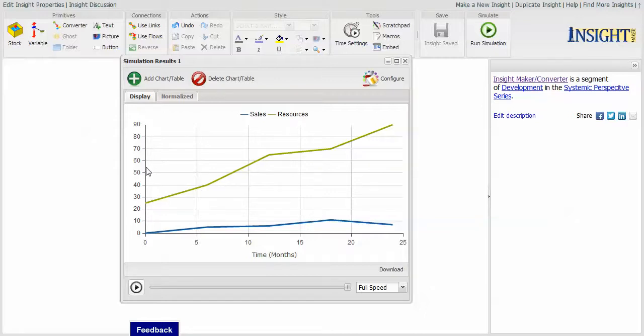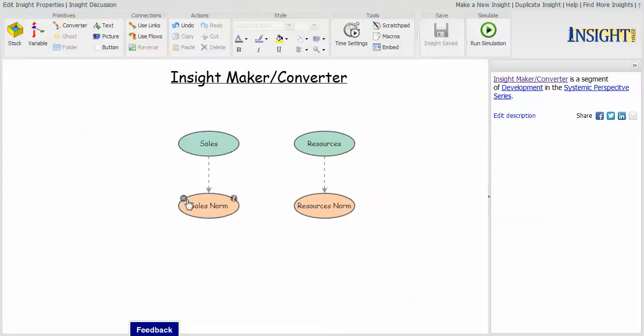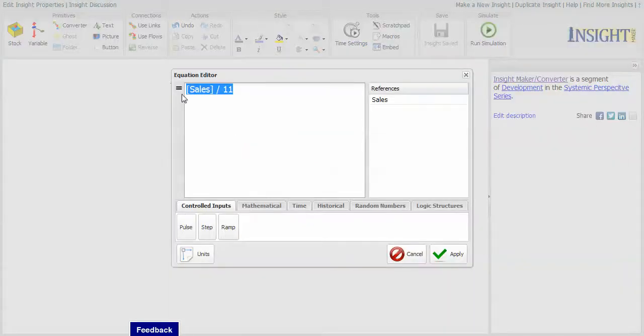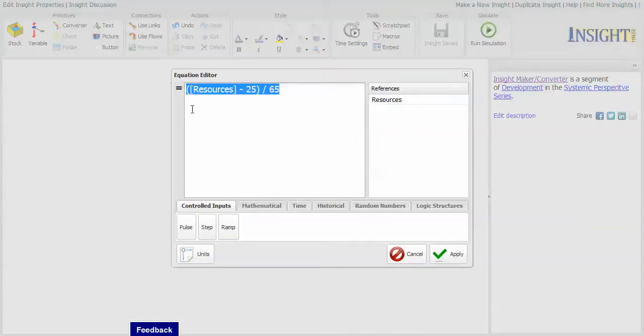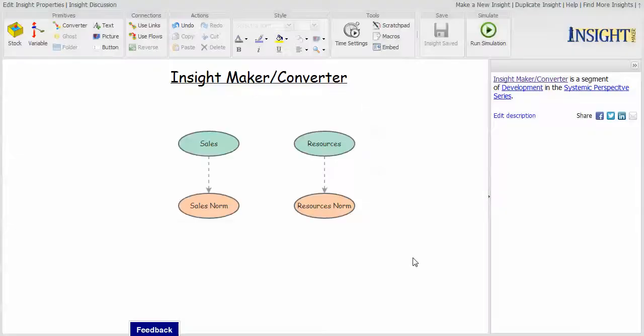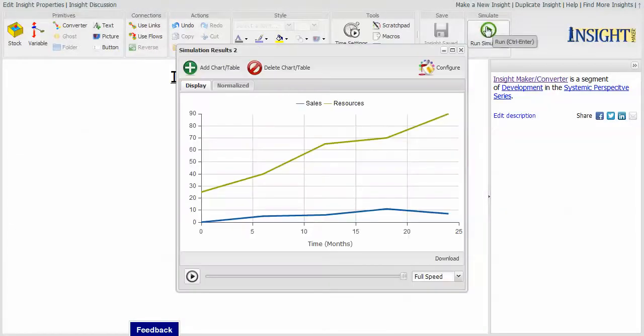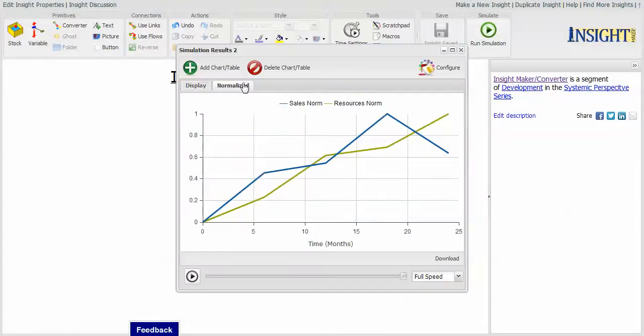The extent to which they vary differs greatly. If you take that data and normalize it, so that this is sales divided by the maximum level of sales and this is the resources divided by, subtract 25 divided by 65, which normalizes it to a value between zero and one.